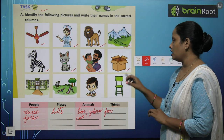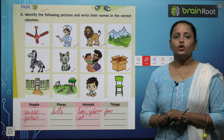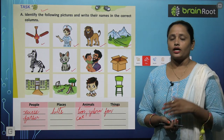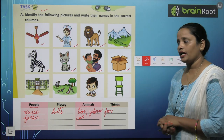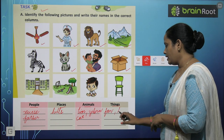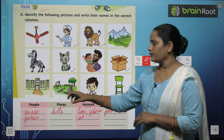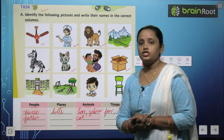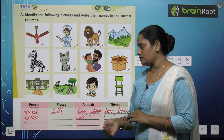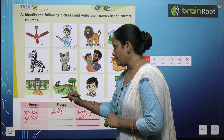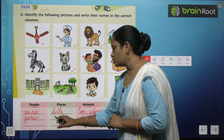Next is a box — an empty box. Toh box kya hai? Koi person hai? Place hai? Animal hai? Ya thing hai? Yes, yeh ek thing hai. Next picture hai school ki. Toh yeh school — woha ek place hai. So let's write here — school.